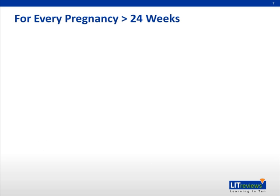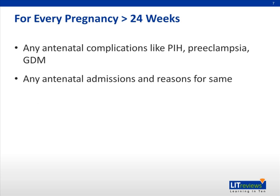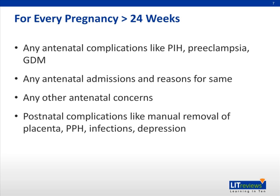Now let's look at the history to elicit for every pregnancy that has gone past 24 weeks. You need to ask for any antenatal complications like pregnancy-induced hypertension, preeclampsia, or gestational diabetes, any antenatal admissions and the reasons for them, and any other antenatal concerns. You also need to ask about postnatal complications like manual removal of placenta, postpartum hemorrhage, or puerperal infection or sepsis. Do not forget the mental health of the woman, especially postnatal depression and puerperal psychosis — there is about a 1-in-2 to 2-in-3 chance of recurrence in future pregnancies.